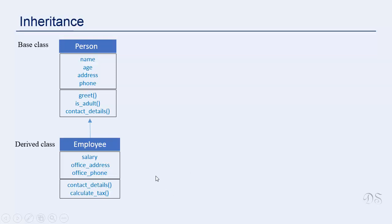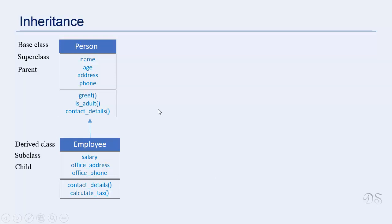The derived classes generally have some added functionality and provide more specific behavior than the base class. This base class is also called the parent class or super class, and the derived class is also called the child class or subclass. In object-oriented terms, this relationship between the base class and the derived class is called an 'is-a' relationship. A derived class is a type of base class — so an employee is a person. By using inheritance, you can implement an 'is-a' type of relationship between classes.